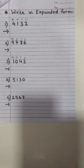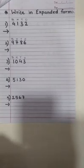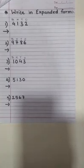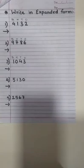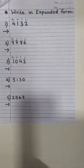Expanded form is nothing but the addition of place value of each digit of the given number. So, let's start doing and you will get to know. The place value of 4 is 4000, correct?